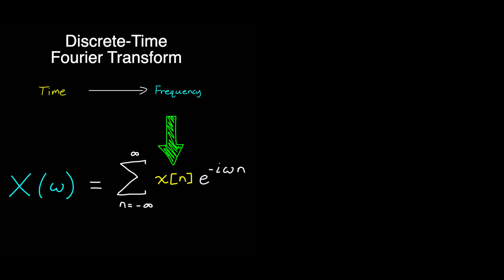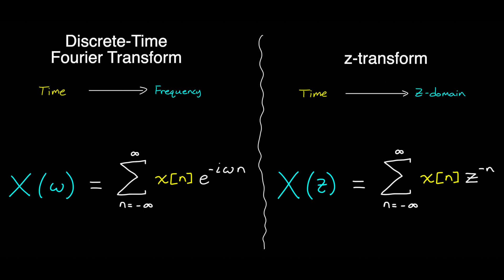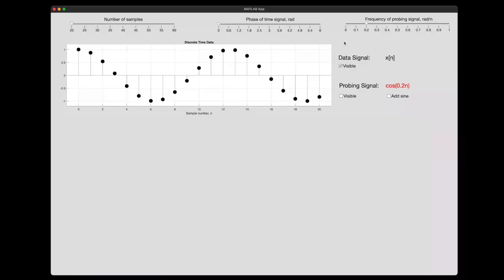The discrete time Fourier transform converts discrete signals in the time domain to the frequency domain — that is, it represents a signal in terms of its frequency content. You can see that it's pretty similar to the Z-transform: in both cases, we're multiplying the time signal by some other signal and summing the result. I'm going to walk through the discrete time Fourier transform with a MATLAB app. This is a discrete time signal x of n, and we can tell just by looking at the data that the signal is probably made up of a single dominating frequency.